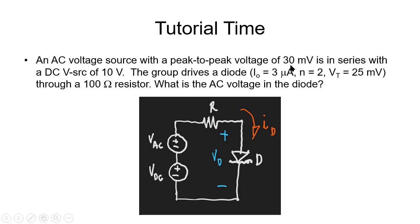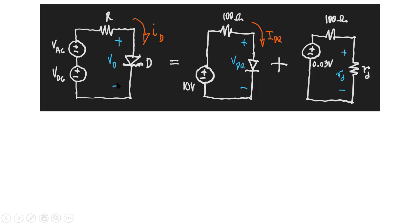Now let's do that again for a circuit that has an AC component — a small signal of 30 mV peak-to-peak from the AC voltage source, which is small compared to 10 V DC. This group is driving a diode with reverse saturation current I_s = 3 µA, fabrication coefficient n = 2, thermal voltage V_t = 25 mV, and resistor R = 100 Ω. The question asks for the AC current in the diode. First, find the quiescent point — mainly I_Q.